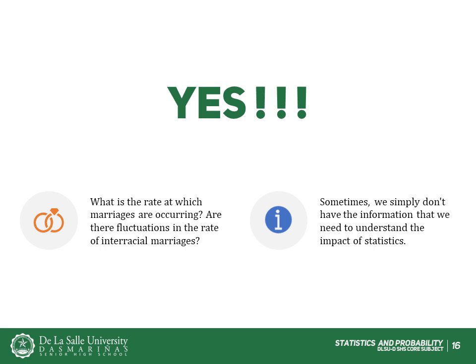Are there any problems with this logic? Yes. A major flaw is that we don't have the information that we need. What is the rate at which marriages are occurring? Suppose only 1% of marriages 25 years ago were interracial, and so now 1.75% of marriages are interracial. 1.75 is 75% higher than 1, but this latter number hardly suggests the acceptability of interracial marriages. In addition, the statistic does not rule out the possibility that the number of interracial marriages has seen dramatic fluctuations over the years, and this year is not the highest. There is simply not enough information to fully understand the impact of the statistics.